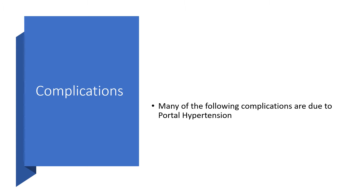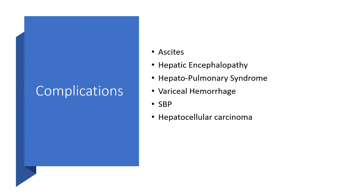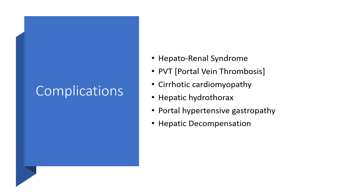Complications. Many of the following complications are due to portal hypertension. The complications of liver cirrhosis could be ascites, hepatic encephalopathy, hepatopulmonary syndrome, variceal hemorrhage, spontaneous bacterial peritonitis, hepatocellular carcinoma. Others could be hepatorenal syndrome, portal vein thrombosis, cirrhotic cardiomyopathy, hepatic hydrothorax, portal hypertensive gastropathy, and hepatic decompensation.